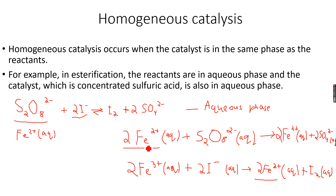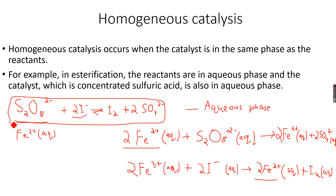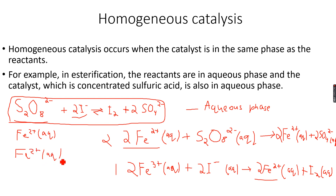2 moles of Fe²⁺ reacted and 2 moles of Fe²⁺ have been regenerated. The overall reaction that takes place is the original reaction, and Fe²⁺ acts as a catalyst. You can also use Fe³⁺ initially — it doesn't really matter which step is first. In either case, the catalyst is Fe²⁺ or Fe³⁺, and these are homogeneous catalysts.